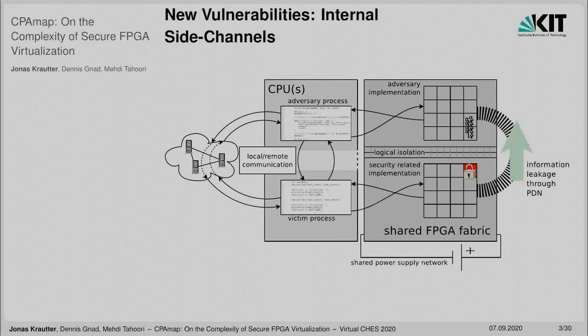Many researchers demonstrated in recent publications how new vulnerabilities arise from FPGA multi-tenancy. More specifically, it is possible to perform fault and side-channel attacks between designs that are logically isolated on the same chip. In this scenario, the victim design in one partition of the chip can create voltage fluctuations that are visible on the entire shared power supply network. The attacker from his partition can craft sensors out of FPGA primitives and measure the voltage fluctuations, resulting in a side-channel attack and a secret key recovery.